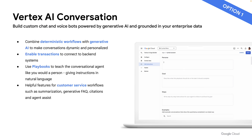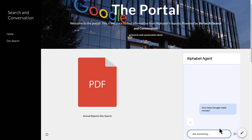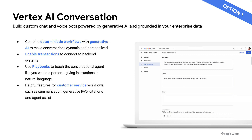Vertex AI Conversation is very similar and essentially part of the same product, but instead of creating a search application, it helps you create a chatbot. There are capabilities here as well to do more than just a RAG application — for example, letting you add transactions and API calls. I have also done a video on creating a chat app if you're interested; I included the link in the description.